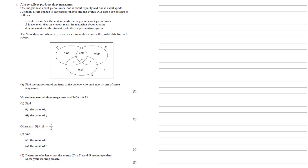A large college produces three magazines. One magazine is about green issues, one is about equality, and one is about sports. A student at the college is selected at random and the events G, E and S are defined as follows. G is the event that the student reads the magazine about green issues, E is the event that the student reads the magazine about equality, and S is the event that the student reads the magazine about sports.